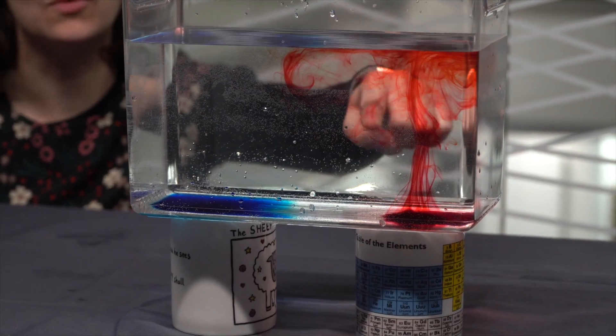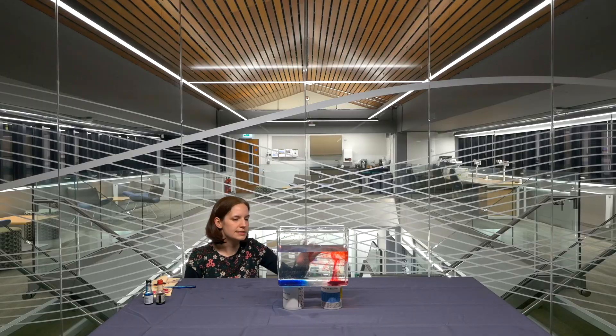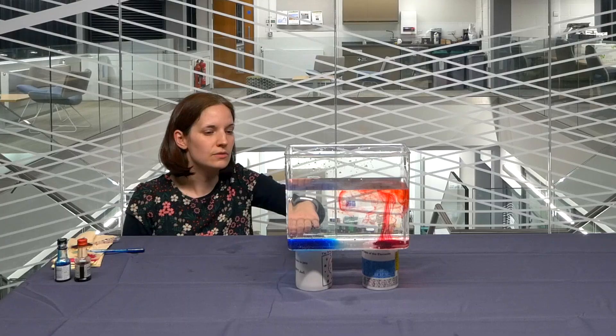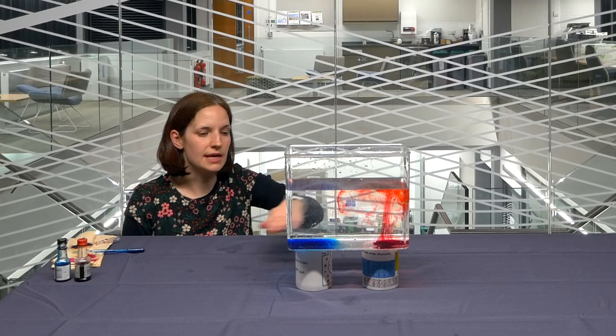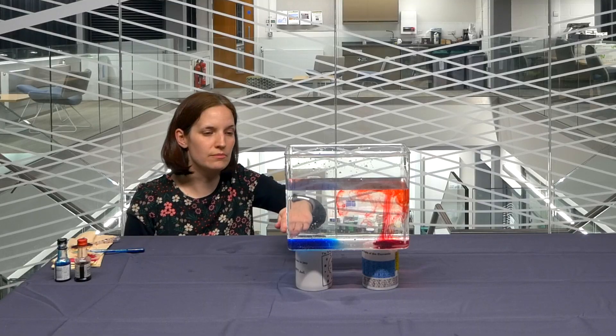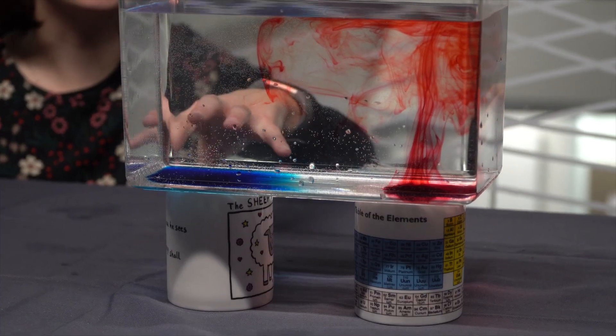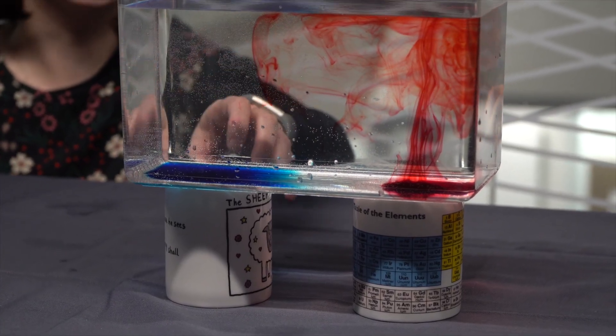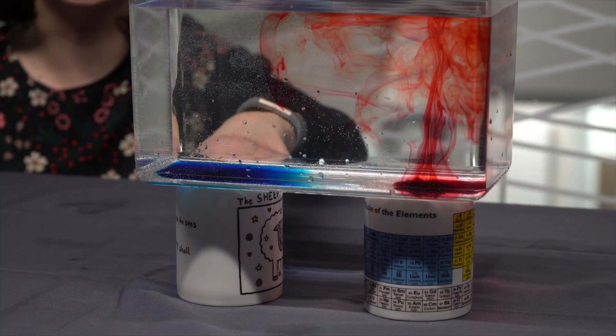Hot air or hot water, in this case, rising. At the same time, on the other side of the tank, we can see that the blue dye is staying right at the bottom and it's not moving upwards at all. This is because the water here is cold and it's being cooled by the ice in the mug.